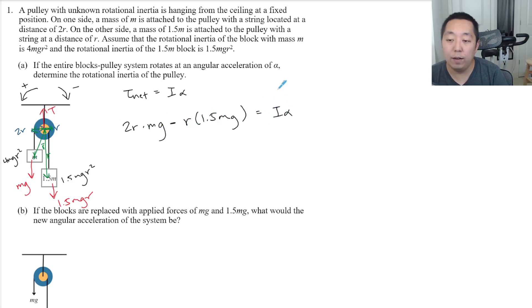So equals I alpha. Now let's think about the I part. The I has to be the sum of the rotational inertia of everything in the system. So that is the pulley and the two blocks.